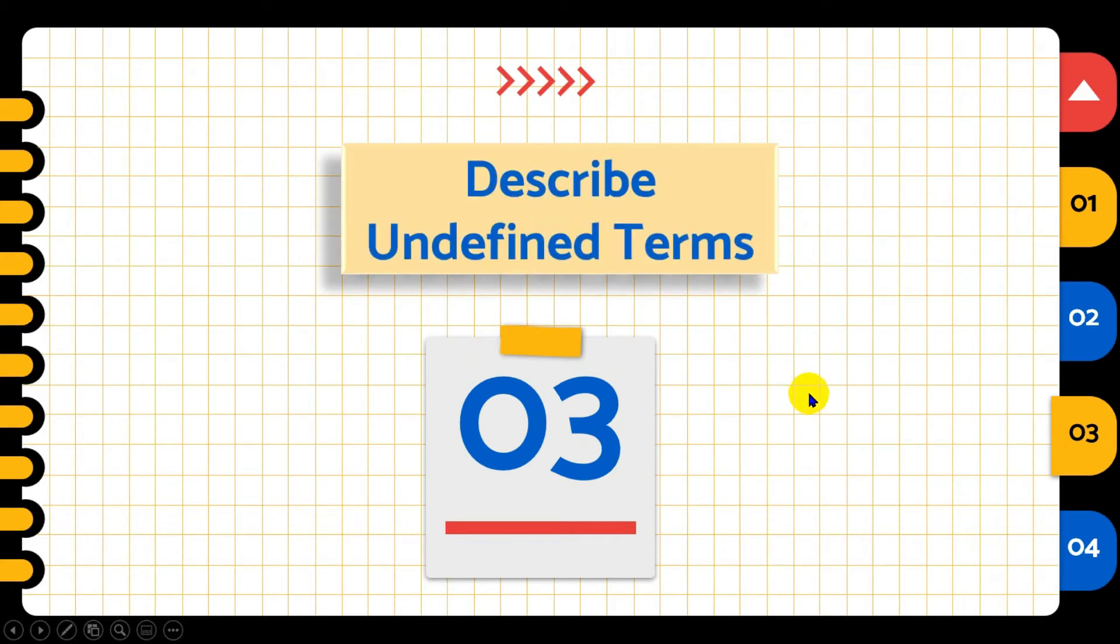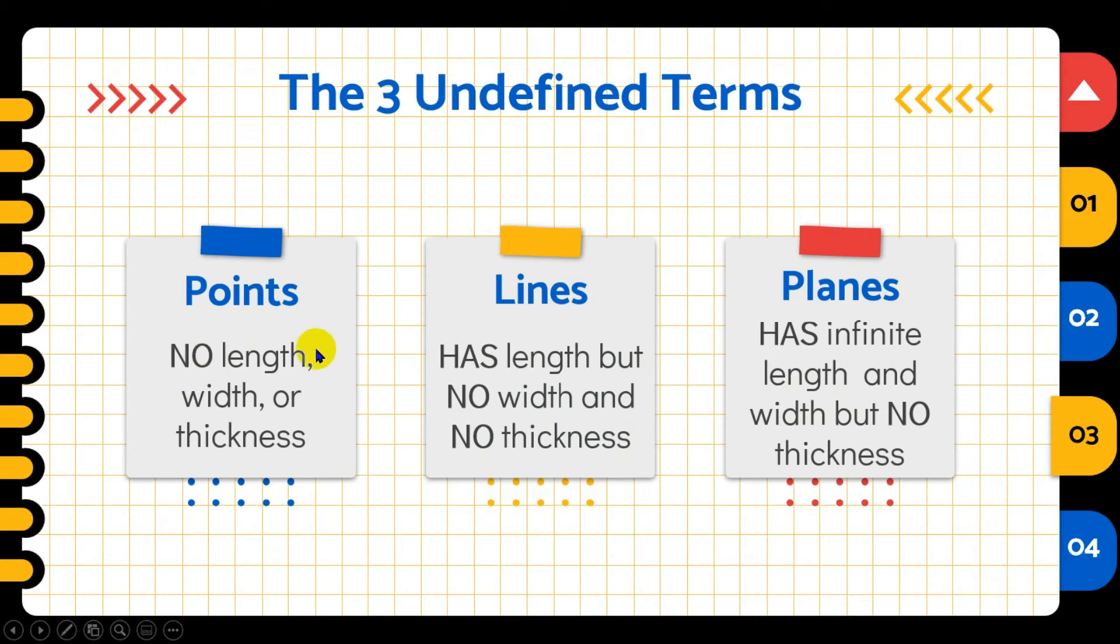Now we're going to describe these three undefined terms. Again, we have points, lines, and planes. Here we can see how these three undefined terms are formed.